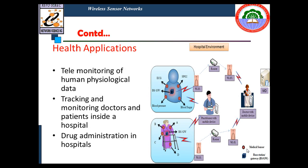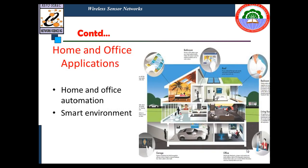In health applications, for remote areas where it is not possible to have an eminent doctor, telemedicine allows a doctor to know the health condition of a patient remotely. It is also possible to have drug administration in hospitals. In home and office applications, home automation uses sensors to operate systems remotely.